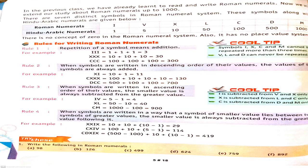Third rule: when symbols are written in ascending order of their values, the smaller value is always subtracted from the greater value. For example, I and V — here ascending order is used, first 1 then 5, so we subtract: 5 minus 1 equals 4. So 4 is represented as IV.